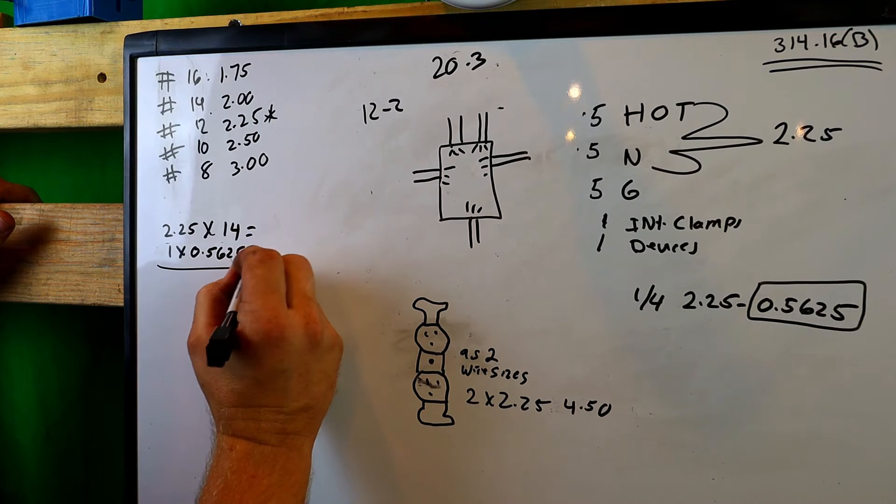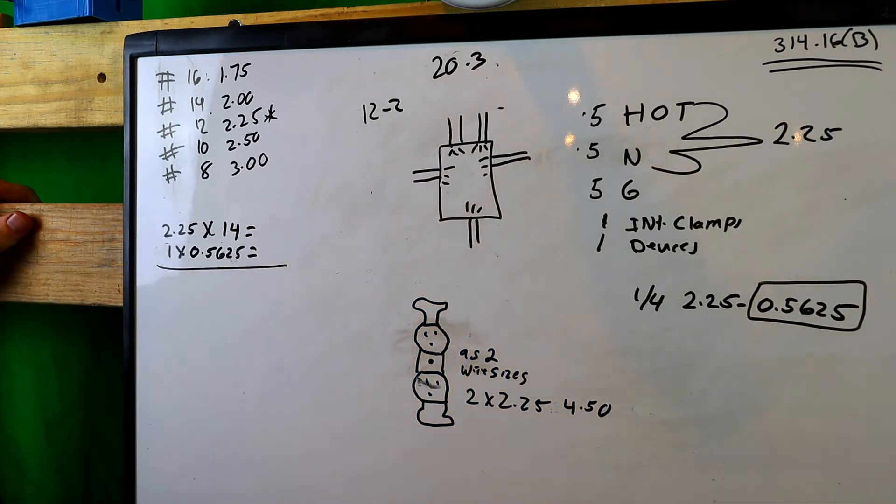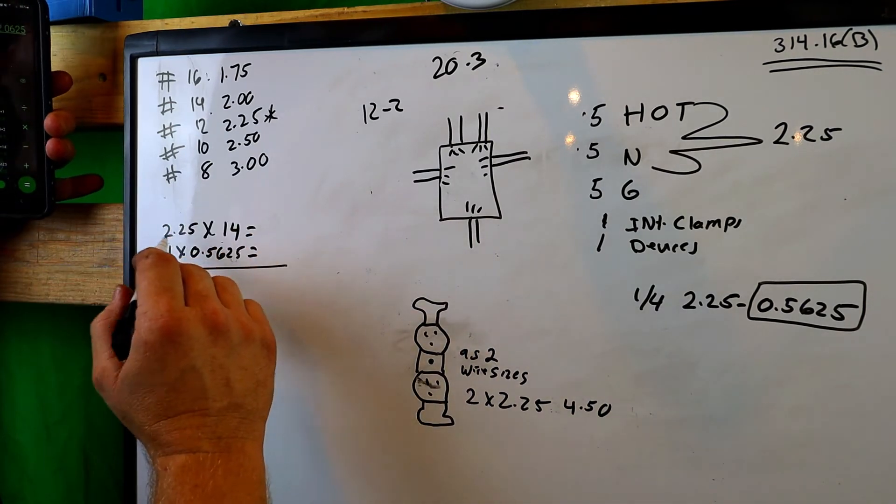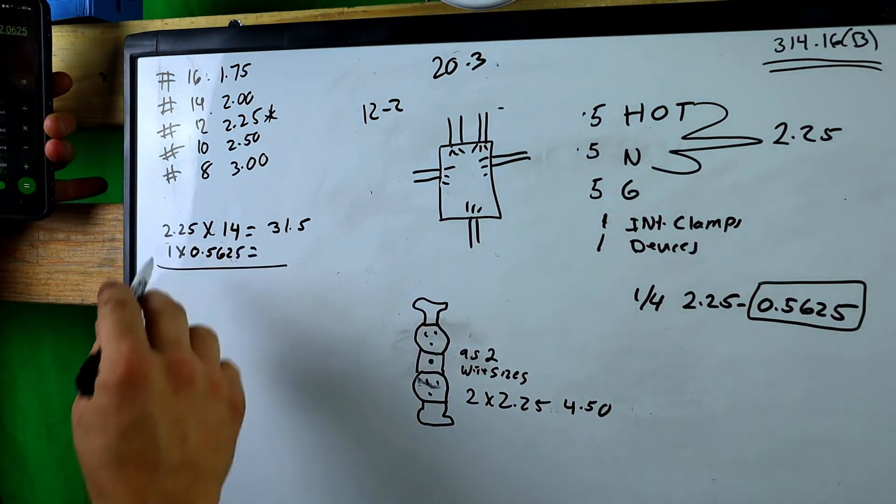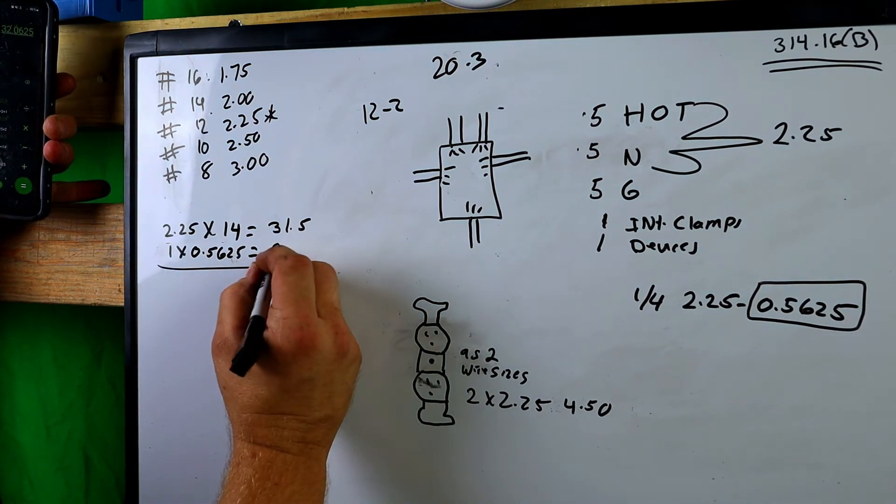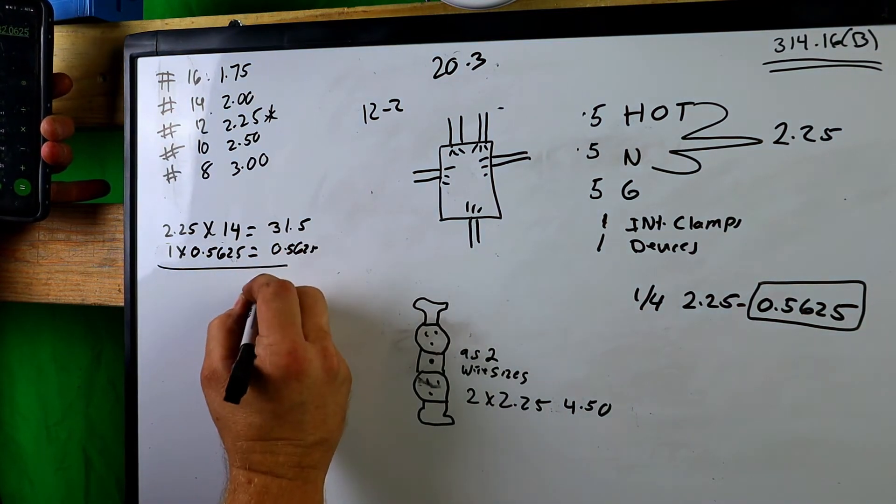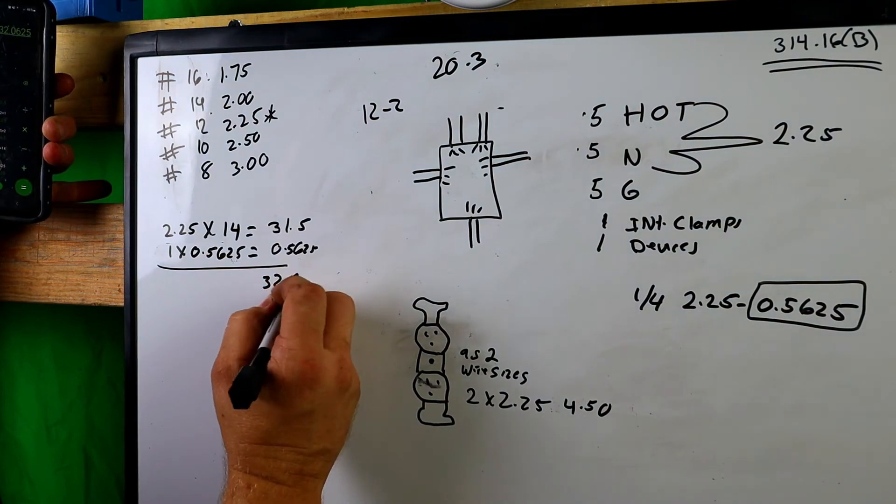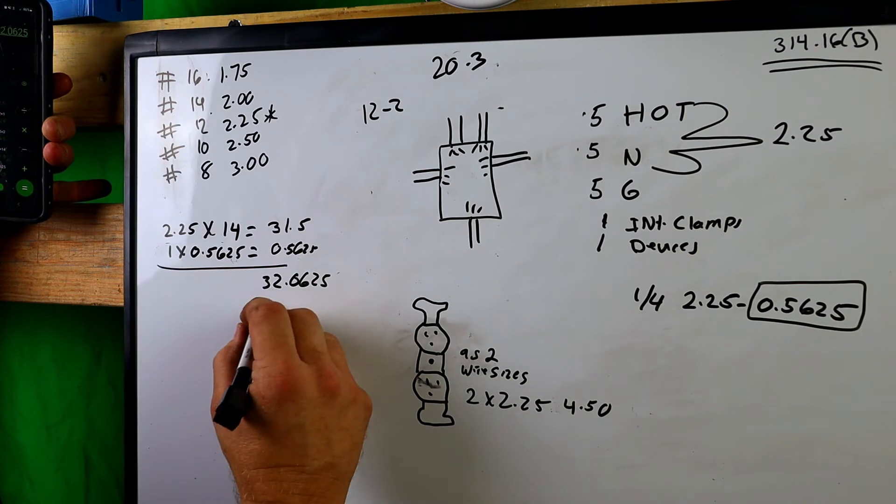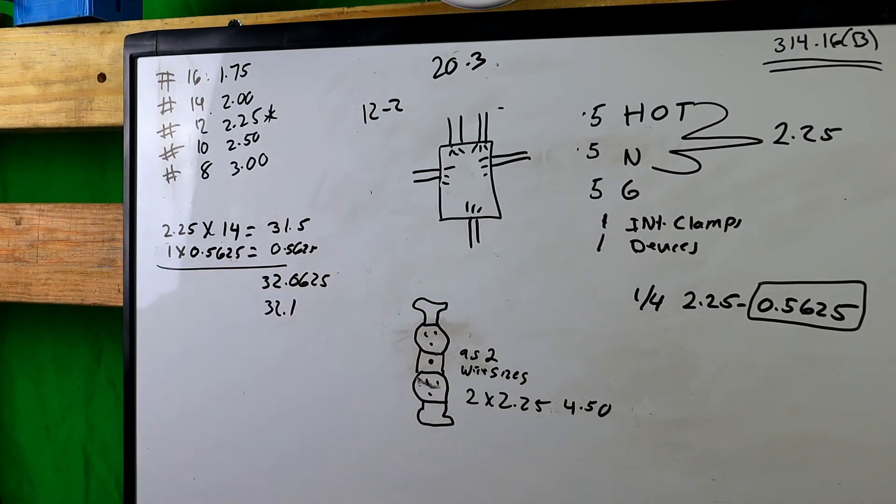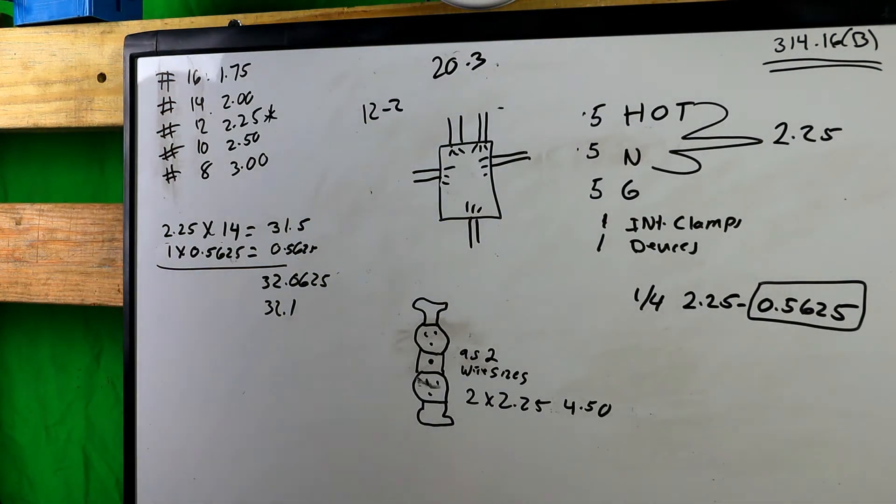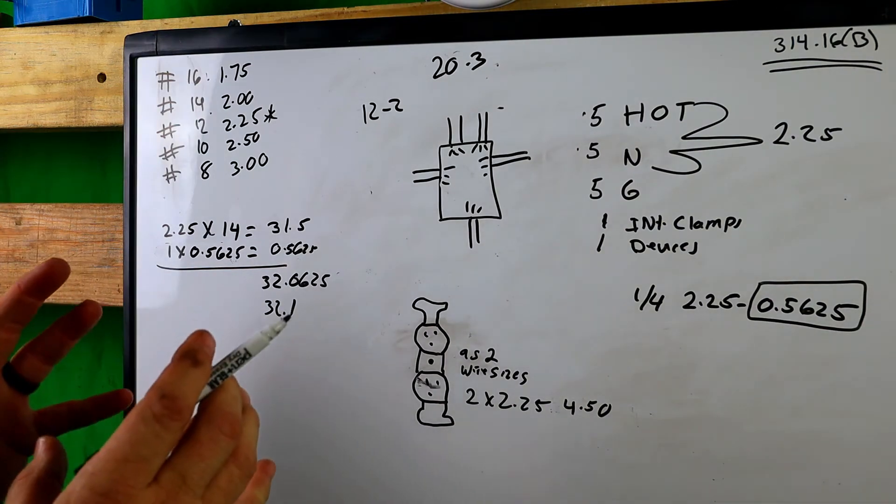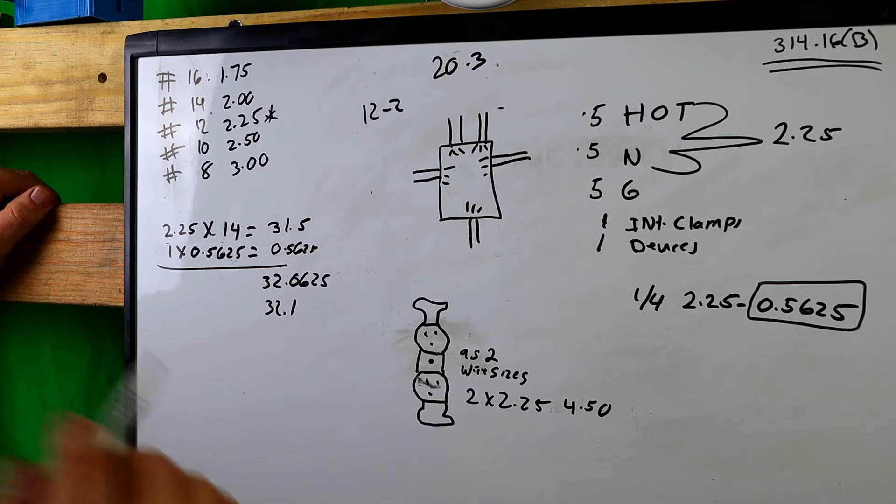Cut and dry, does that make sense guys? I hope so. Let's do this math and figure out what the math is. I'm not gonna lie, I had to get my calculator out. If you do the math, this is 31.5, and then this is obviously 0.5625, which is a grand total of 32.0625, or we can just say 32.1 if we want to round it up. So basically you would need that size box.